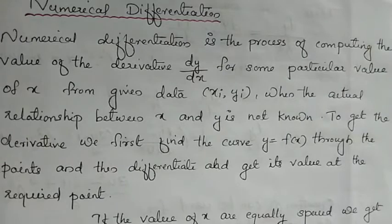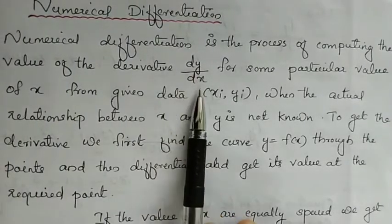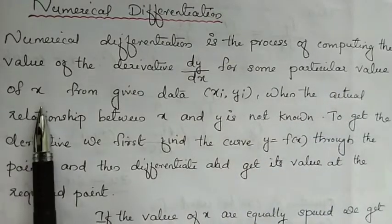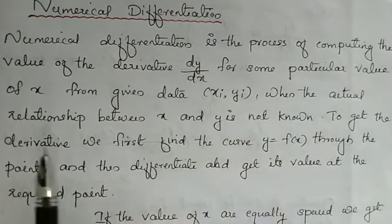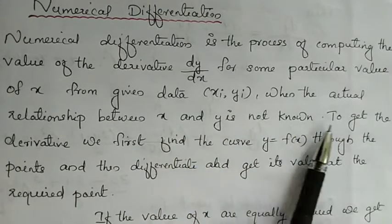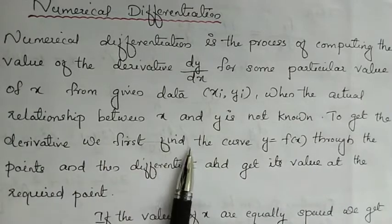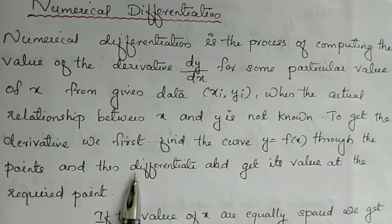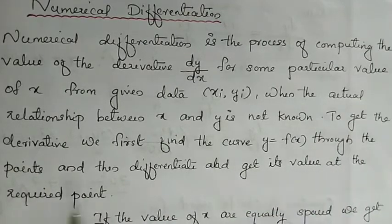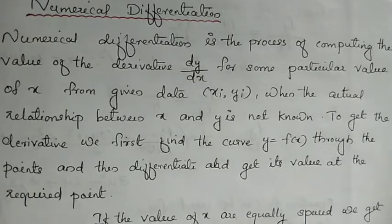Starting with numerical differentiation. Numerical differentiation is a process of computing the value of the derivative dy/dx for some particular value of x from given data (xi, yi), when the actual relationship between x and y is not known. To get the derivative, we first find the curve y = f(x) through the points, then differentiate and get its value at the required point. In the first chapter, Newton's forward and backward methods are discussed.